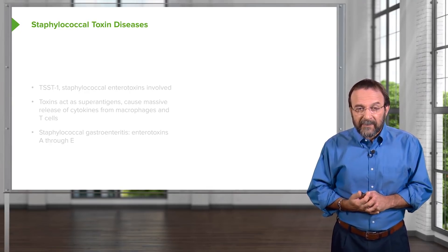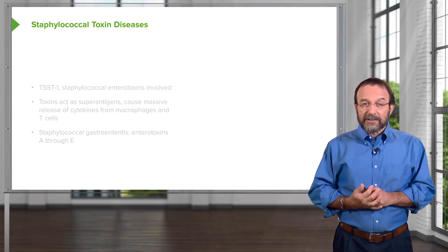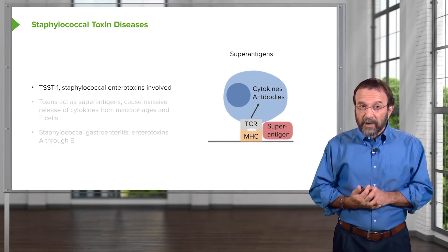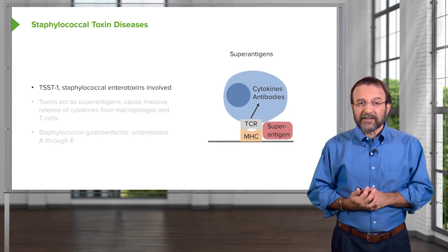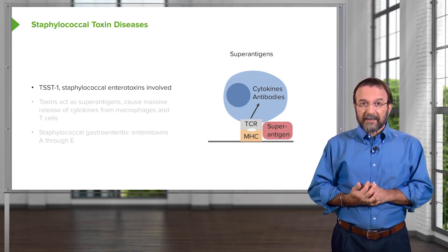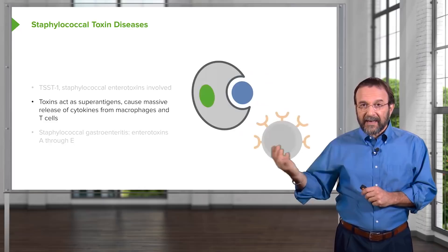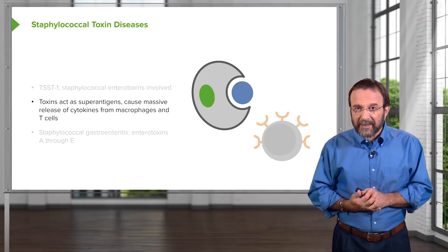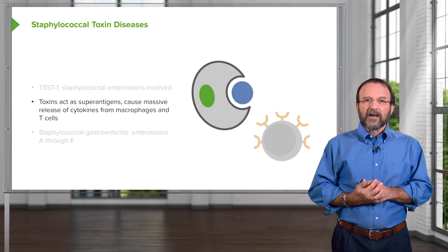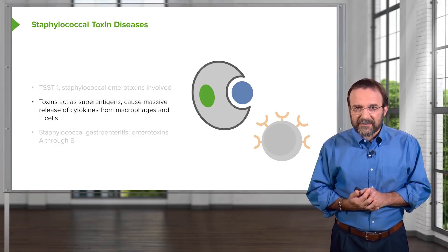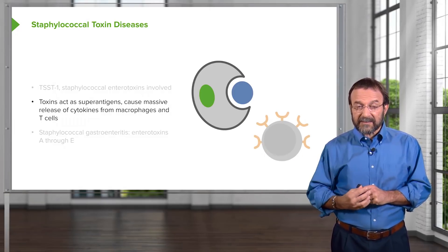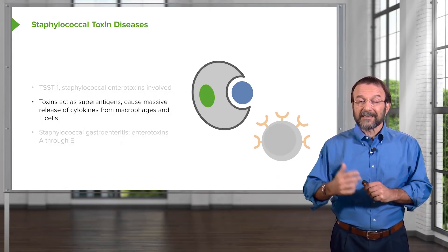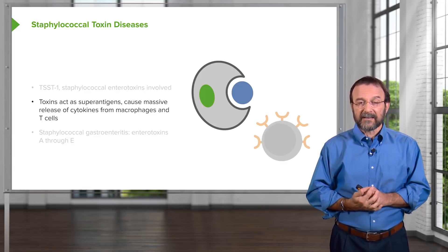One of the main toxins that causes toxic shock is TSST-1 — toxic shock syndrome toxin number one — an enterotoxin that acts as a superantigen. Superantigens bind the T cell receptor and the major histocompatibility protein on the surface of cells, causing massive release of cytokines from macrophages and T cells, which are then responsible for the symptoms of toxic shock syndrome.